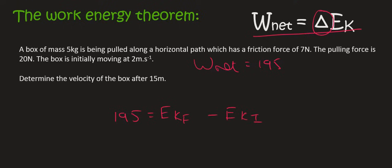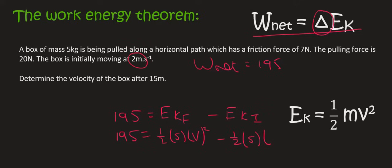Now remember, kinetic energy is equal to a half mv squared. And so we can say that 195 is equal to a half. And then the mass is five kilograms. The velocity final, we don't know. So I'm just going to say v squared minus. And now in the beginning, the mass was also five, but the velocity was two. And so this 195, because it's positive, it's going to cause the velocity to be more than what it was in the beginning.